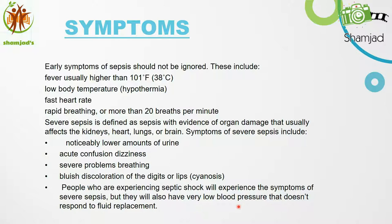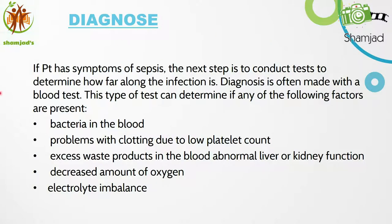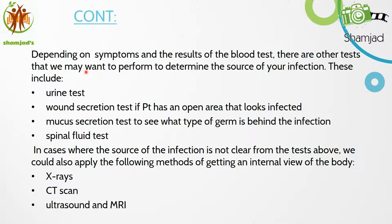If the patient has symptoms of sepsis, the next step is to conduct tests to determine how far along the infection is. The diagnosis is often made with blood tests. This type of test can determine if any of the following factors are present: bacteria in the blood, problems with clotting due to thrombocytopenia or low platelet count, excess waste products in the blood, abnormal liver or kidney function, and decreased oxygen or electrolyte imbalance.